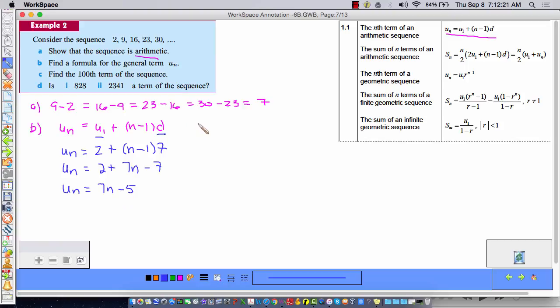So to find the 100th term of the sequence, well, I know my general term is equal to 7N minus five. So if I want to find the 100th term, I replace N with 100. U sub 100 is equal to 7 times 100 minus five equals 700 minus five, which is 695.